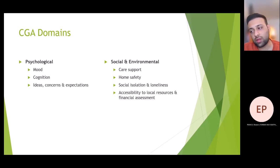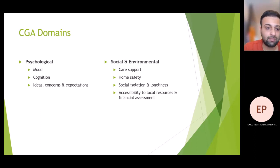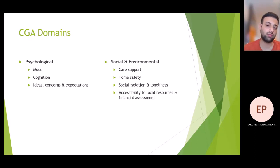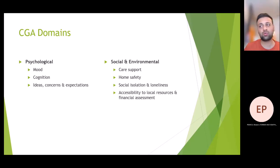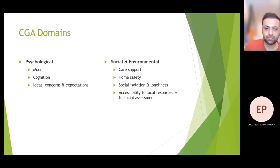The psychological domain covers mood, cognition, and the patient's ideas, concerns, and expectations. The social and environmental history is very important: what type of support does the patient have, do they have equipment at home, are there stairs or loose carpets? This information is best obtained from collateral history from next of kin, particularly for patients with cognitive impairment.